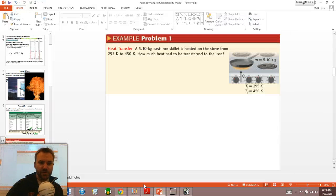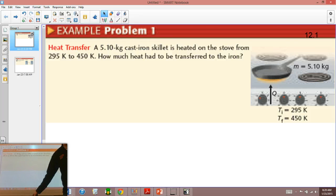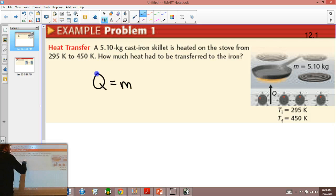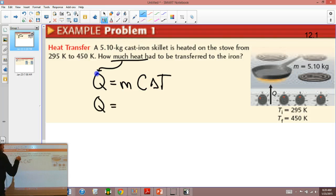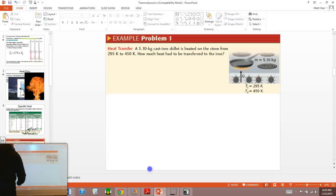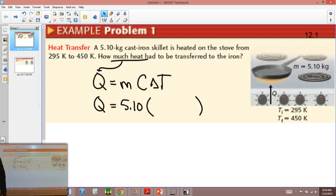So here's our first example. And I'm going to transfer over to my smart notebook file here. It says a cast iron skillet is heated on the stove. How much heat has to be transferred to the iron to raise its temperature from 295 to 450? So it's a direct application of this equation, Q equals mCΔT. How much heat? We don't know. The mass, 5.10 kilograms. The specific heat, we have to look up on that chart. So we'll go back. We'll look up iron. And the specific heat of iron you'll see is 450.